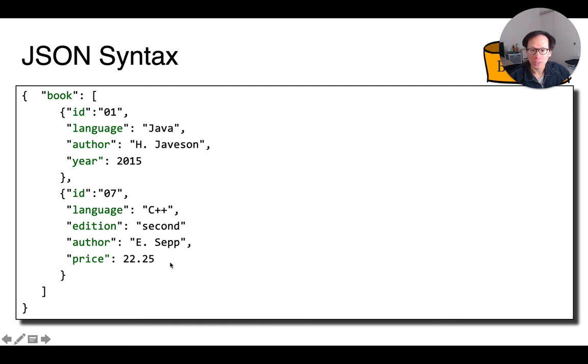Why? Because we can allow each book to contain different amounts of data. For instance, here the first book contains year information while the second one doesn't. And vice versa for price.